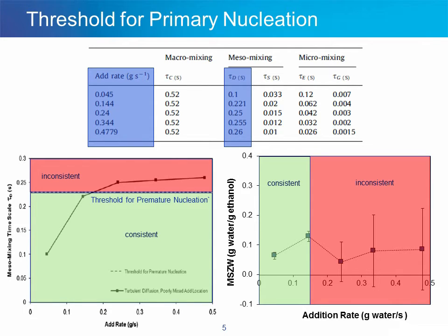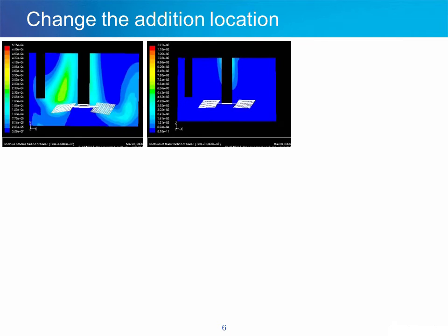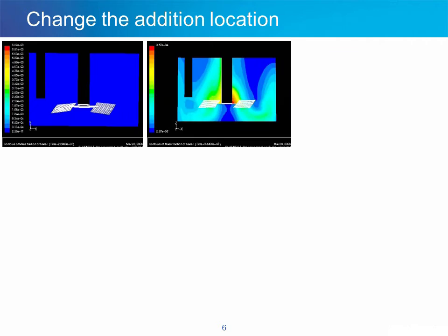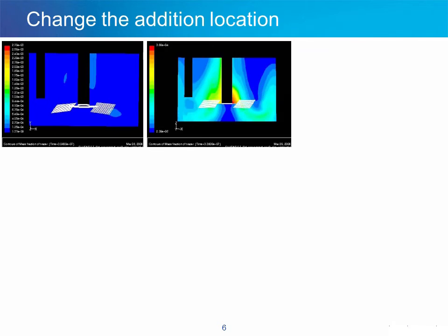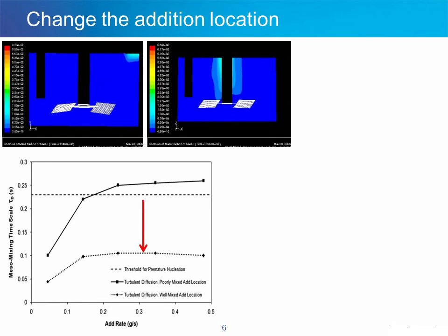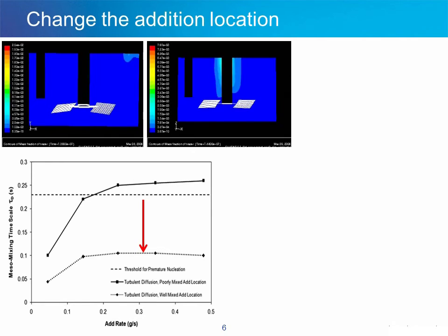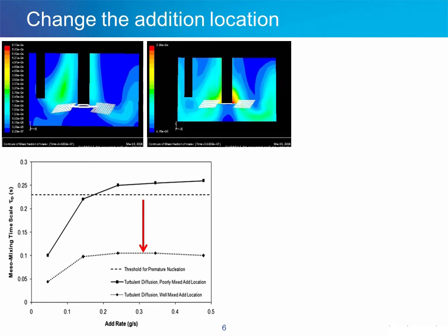Combining this threshold from theory with our experimental results, we can now run these CFD models under a different set of experimental conditions. Instead of adding anti-solvent close to the wall, in this model we add it close to the impeller shaft. We believe this guarantees much faster anti-solvent incorporation, because the downward-pumping impeller pulls the anti-solvent in much more quickly. Calculating the meso mixing time scales for this configuration, we observe that adding anti-solvent close to the impeller shaft brings the meso mixing time scale much lower for every single addition rate we might choose — and it falls below the threshold for premature nucleation.